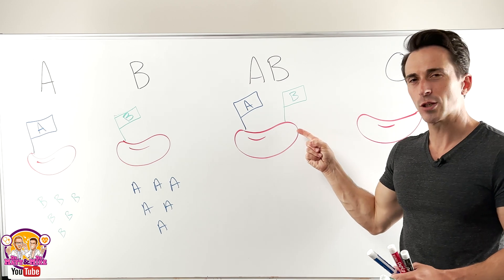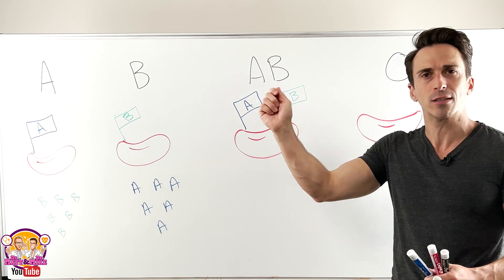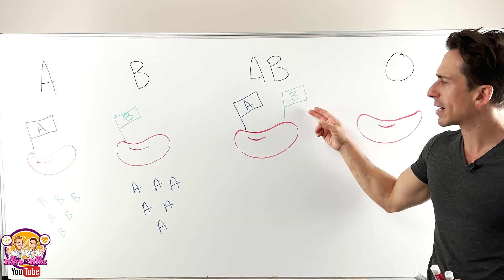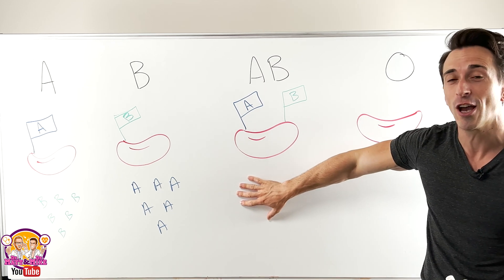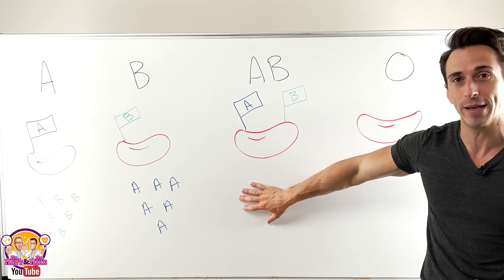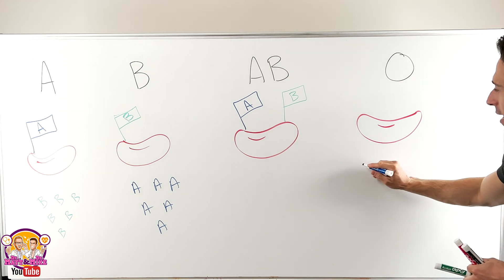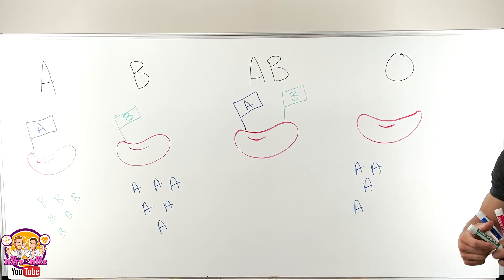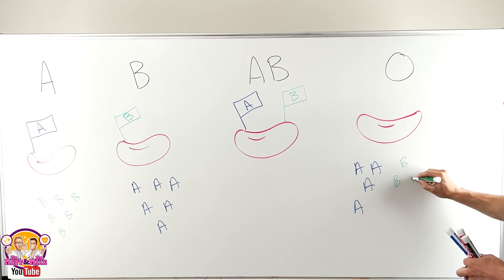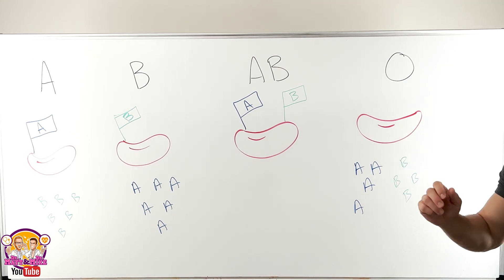What about AB? Well, they're not going to train an army to attack A because they're waving that flag, and they're not going to train an army to attack B because they're waving that flag as well. So AB has no antibodies against A or B — there's no army. Now blood type O is going to train an army to attack A, so it has anti-A antibodies, and it's also going to have anti-B antibodies. So if you're blood type O, you have antibodies against both A and B.